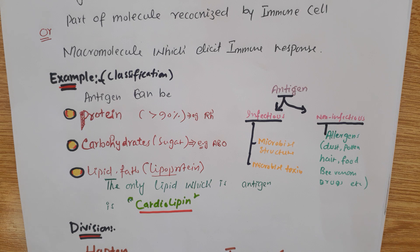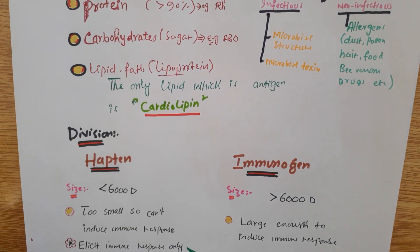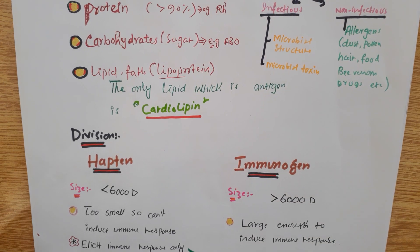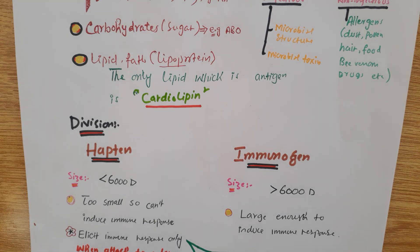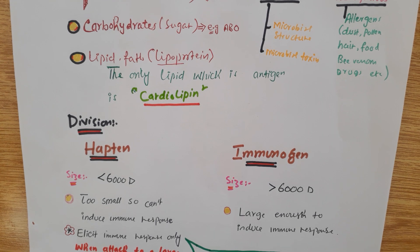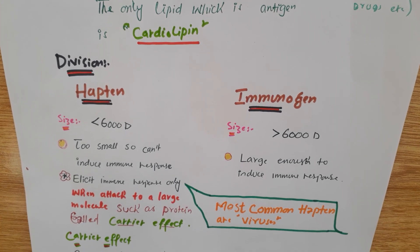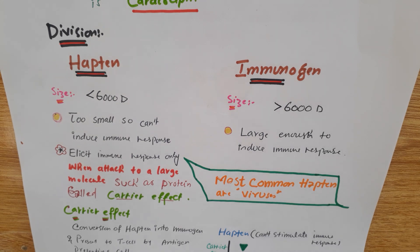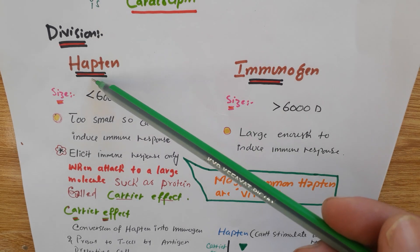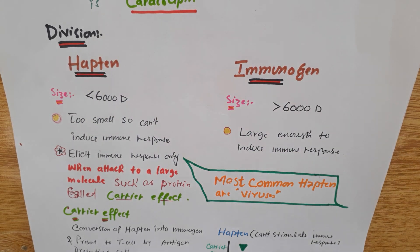We will be dividing the immune system. Antigen can be hapten or it can be immunogen. If the size of the antigen is less than 6,000 daltons, that is going to be hapten. Haptens are very, very small.